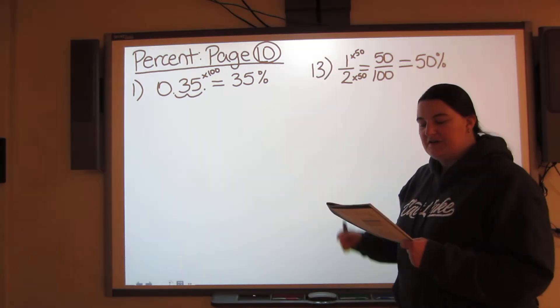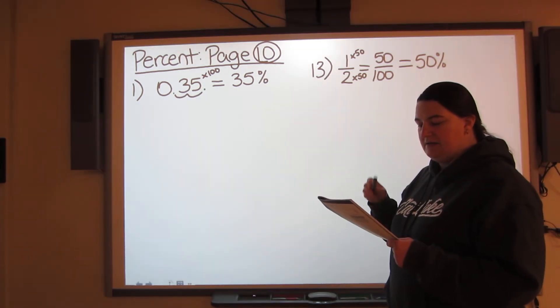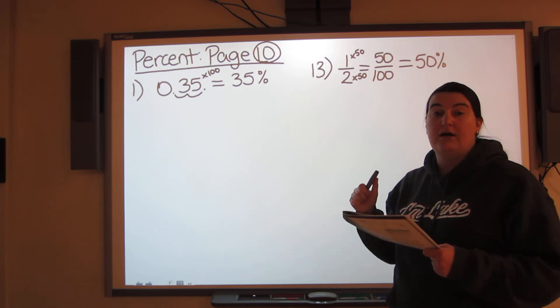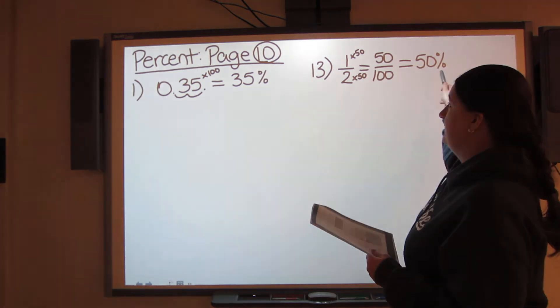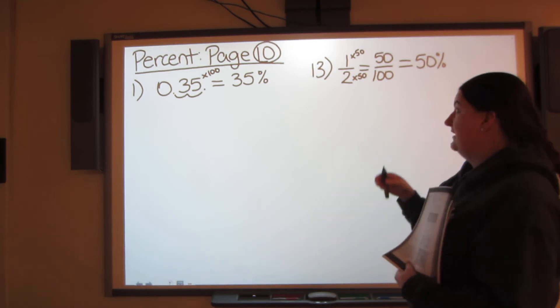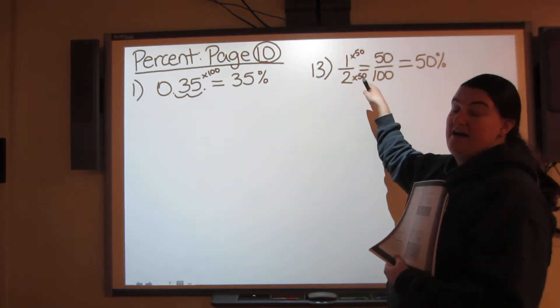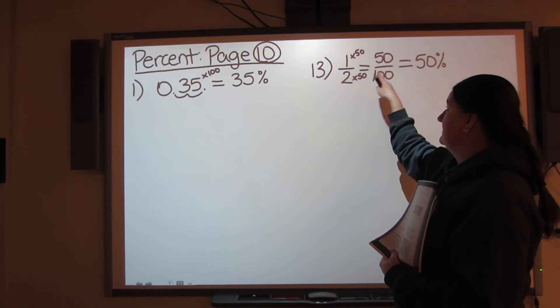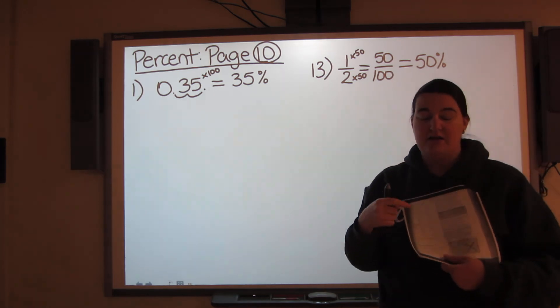So number 13 all the way down to number 24, this is how you do it. Each one of those fractions has a denominator that's part of your math facts, so you can easily turn it into a denominator of 100.